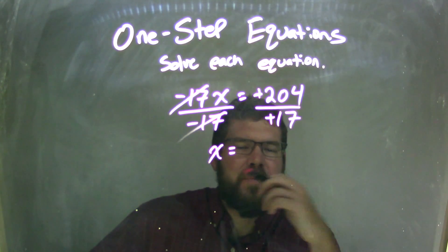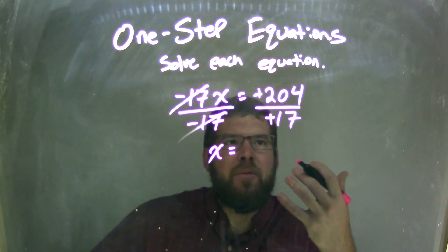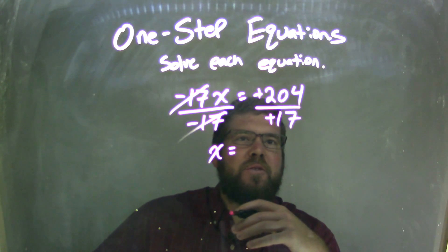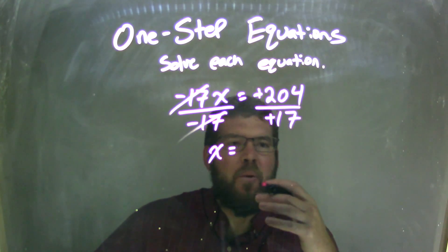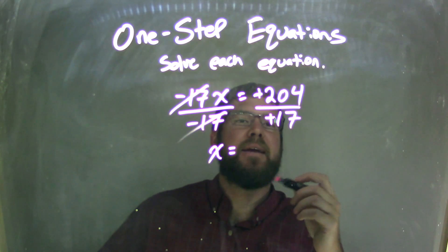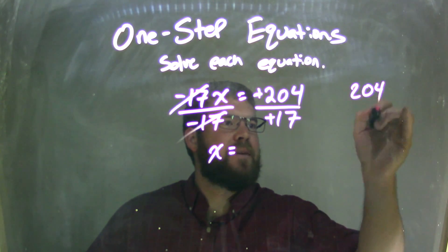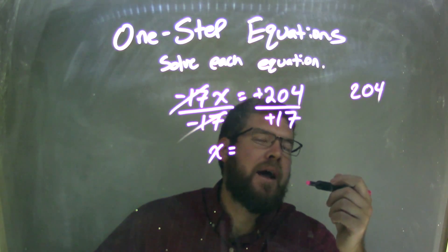Well, 204, can I break that down maybe into something a little easier to see? What numbers go into it? Well, let's think about it here. 204, let's break it down to see if I can get something with a 17, and it might cancel out.